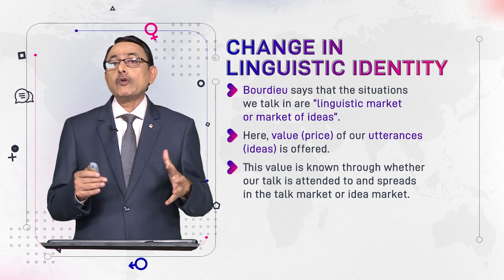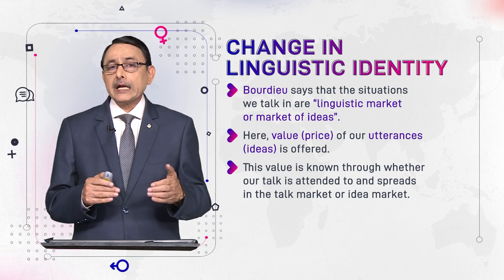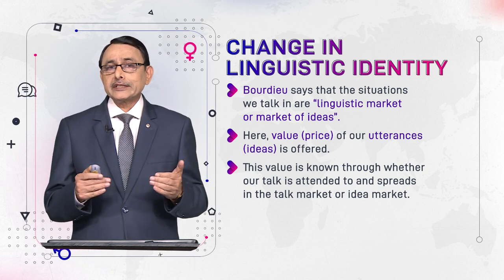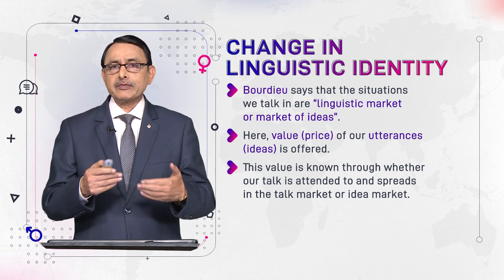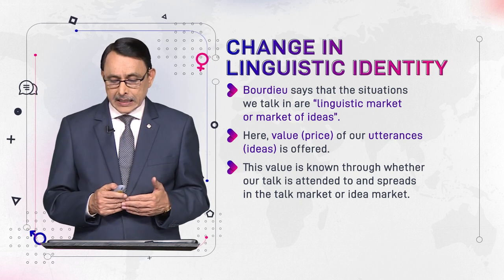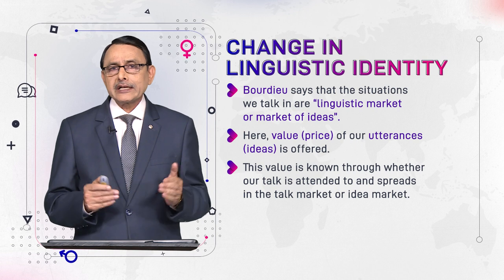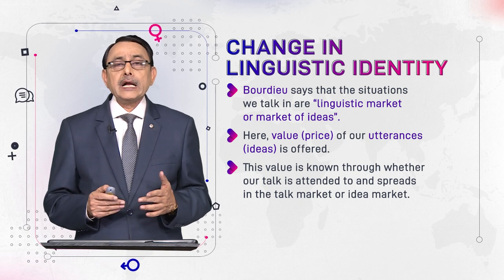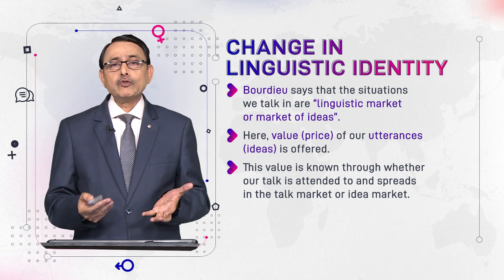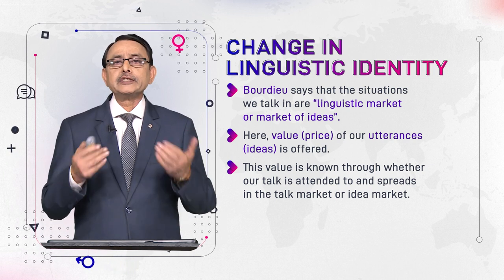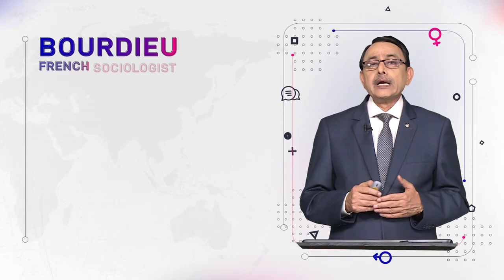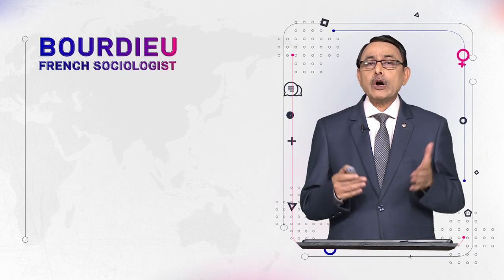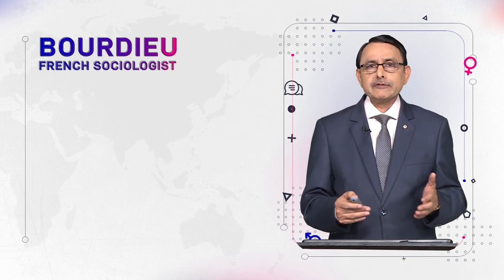The value of our language that we sell in the linguistic market is determined by how the utterance we make is received by people in that situation. Whether this talk is welcomed and spread to other situations would determine the value of our utterance. Value of our utterance means value of our variety, and value of variety means value of the speaker. This is Bourdieu, and these ideas are from his book 'Language and Symbolic Power.'